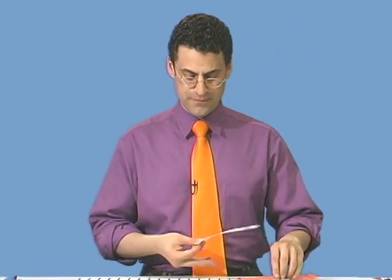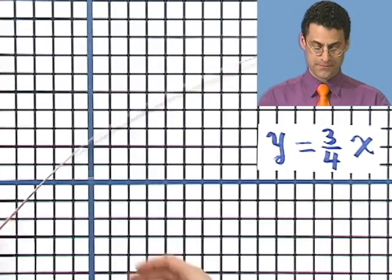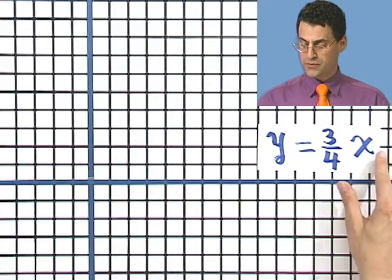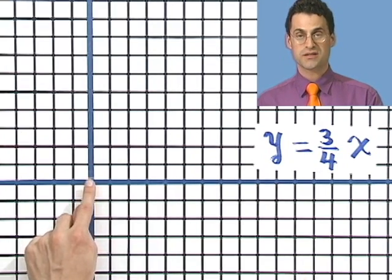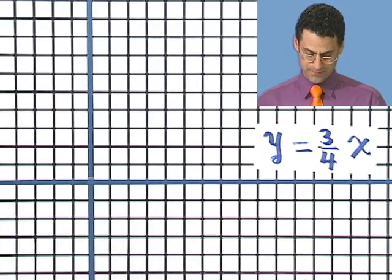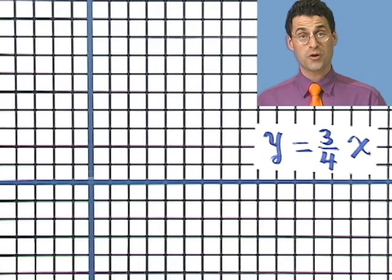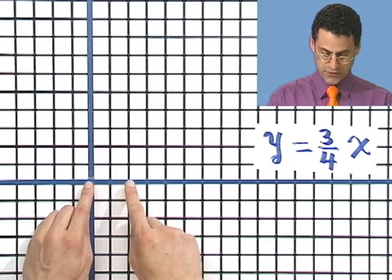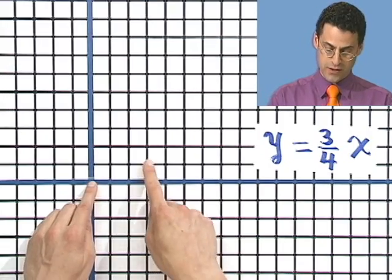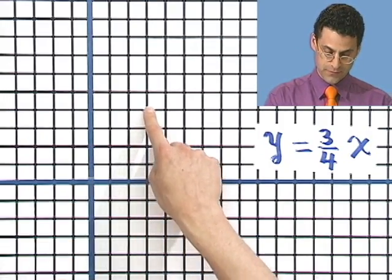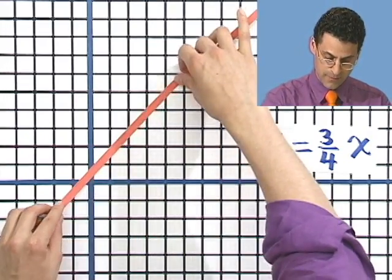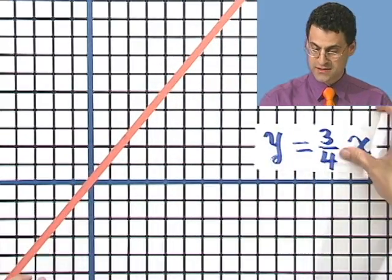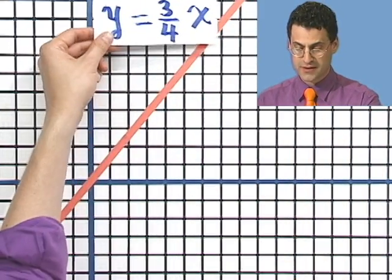So the first line I want to take a look at is y equals 3/4x. Now, notice that the y-intercept is 0. So that means it goes through the origin. So it crosses the y-axis right at the origin. Okay. And what's the slope? The slope is 3/4. So I go 3 over, 1, 2, 3, and 4 up, 1, 2, 3, 4.